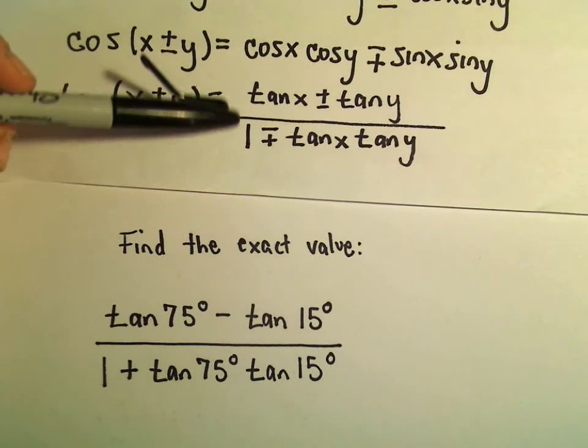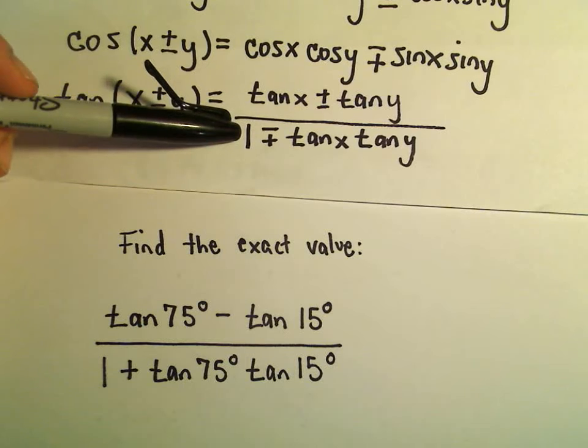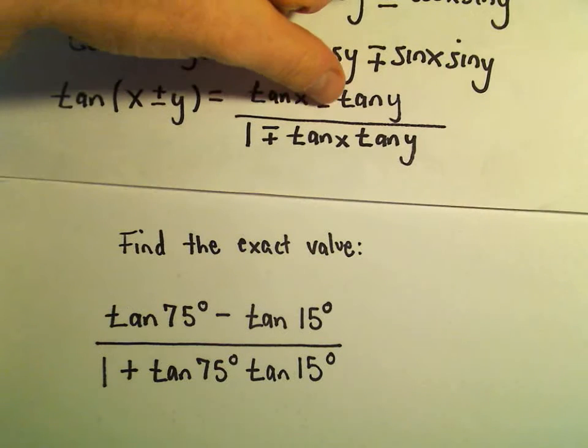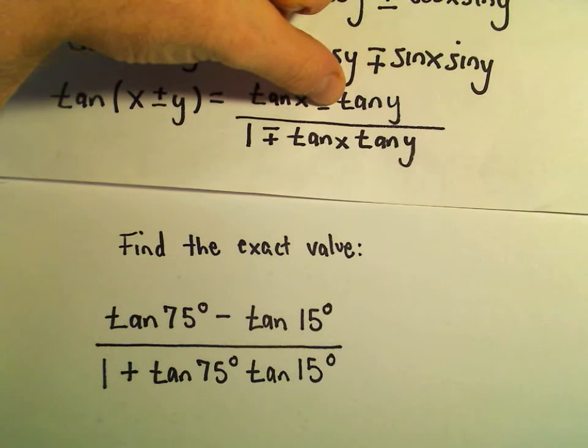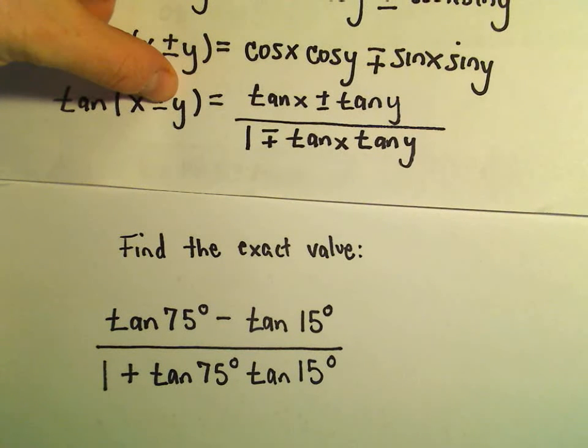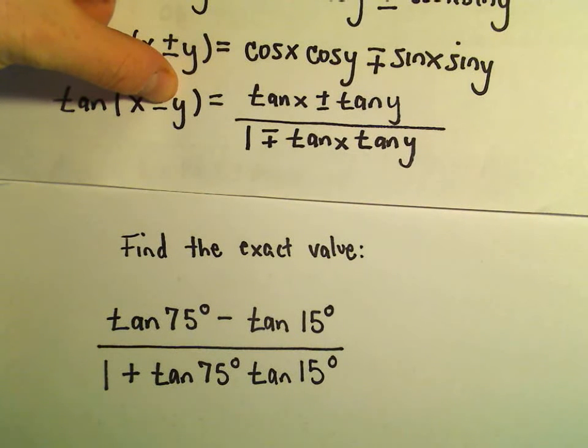Well, certainly this looks like our tangent identity here. And again, if there's a negative sign in the numerator, it says we're going to use the difference identity. It says we'll take tangent of x minus y.